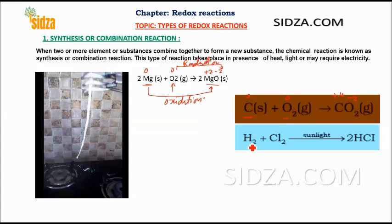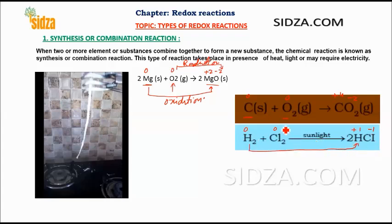Another example is hydrogen reacting with chlorine. Hydrogen has a zero oxidation number and chlorine has zero. In HCl, hydrogen is plus one and chlorine is minus one. So hydrogen undergoes oxidation while chlorine undergoes reduction — decrease in oxidation number.